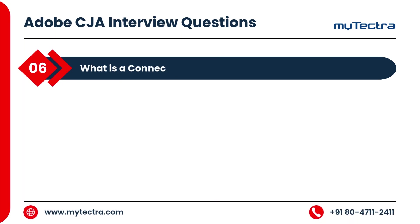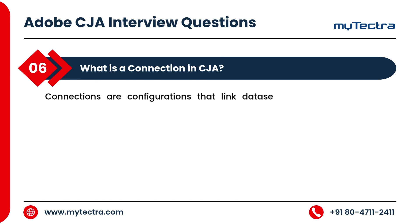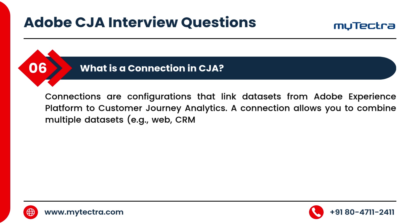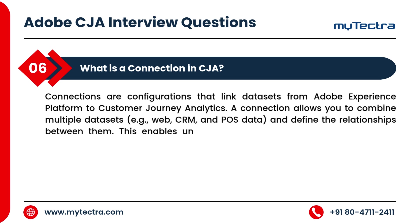What is a connection in CJA? Connections are configurations that link datasets from Adobe Experience Platform to Customer Journey Analytics. A connection allows you to combine multiple datasets — for example, web, CRM, and POS data — and define the relationships between them. This enables unified analysis across customer touchpoints.